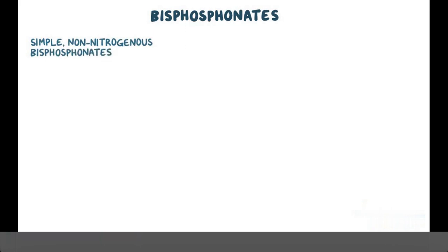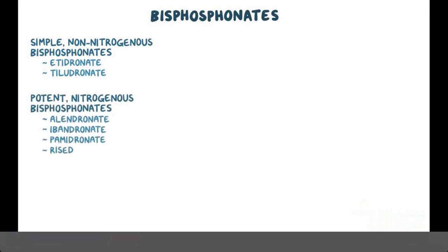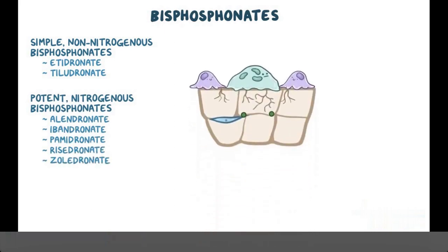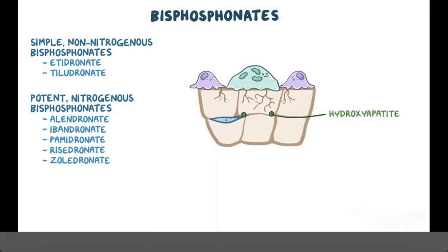First let's start with bisphosphonates, which are first-line therapy for the prevention and treatment of osteoporosis. Bisphosphonates can be subdivided into two main groups: simple non-nitrogenous bisphosphonates, which include etidronate and tiludronate, and potent nitrogenous bisphosphonates, which include alendronate, ibandronate, pamidronate, risedronate, and zoledronate. Bisphosphonates work by binding to hydroxyapatite, which is the mineralized form of calcium found in bones.